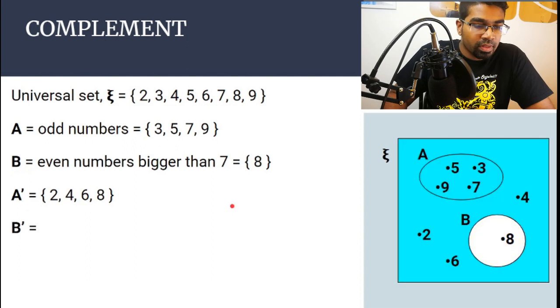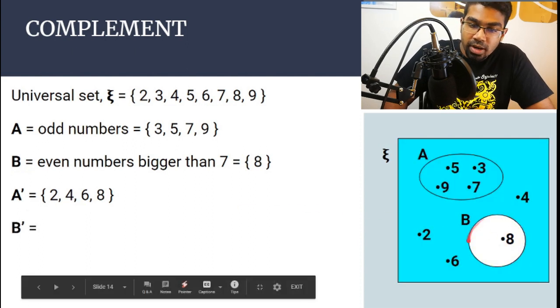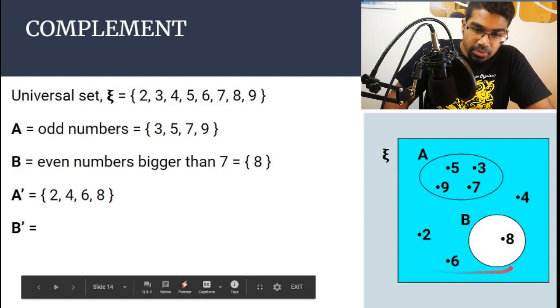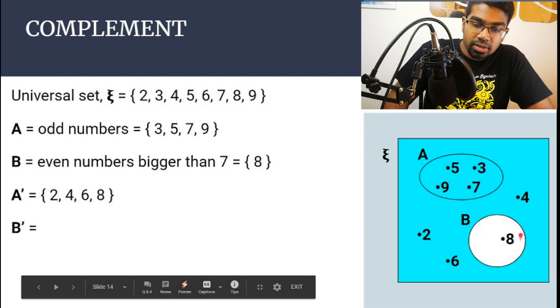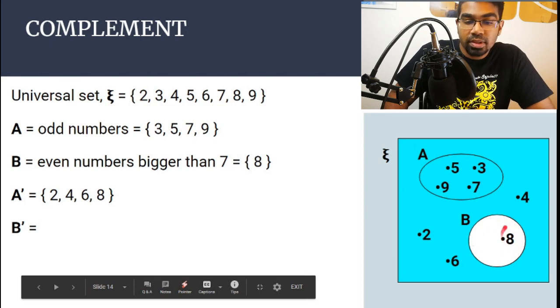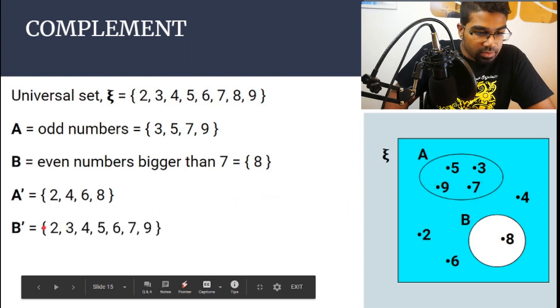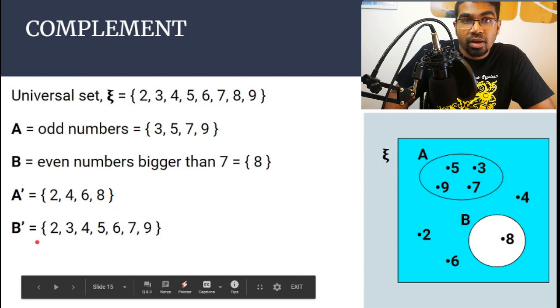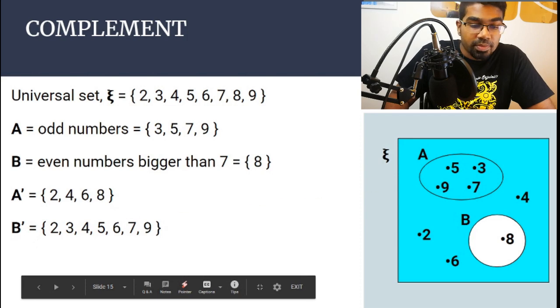Now let's look at B prime. B prime is all outcomes inside the universal set other than set B. Since set B only contains eight, all other elements are: 2, 3, 4, 5, 6, 7, and 9. So B prime, or the complement of B, is everything outside of B.